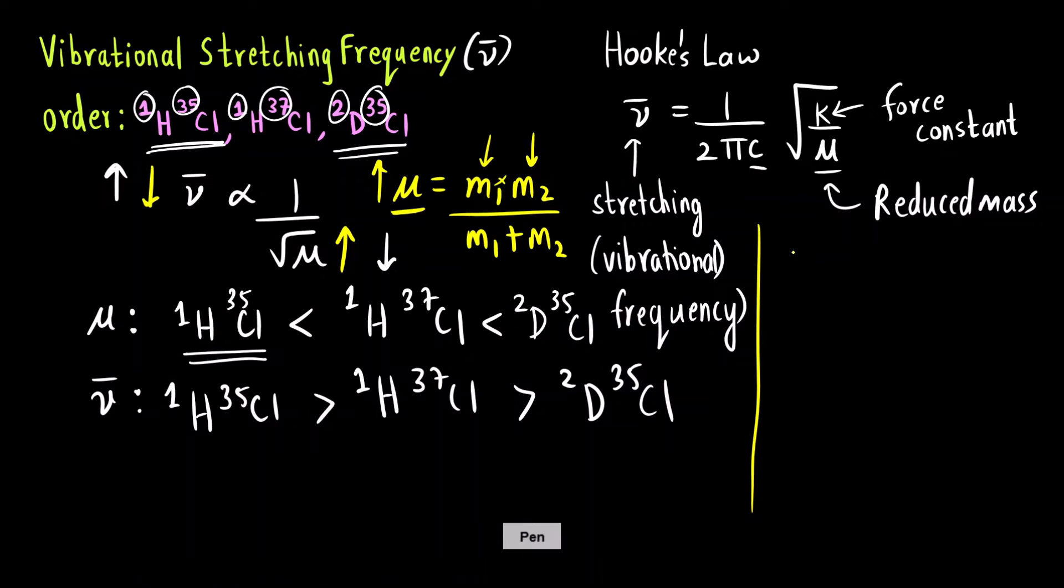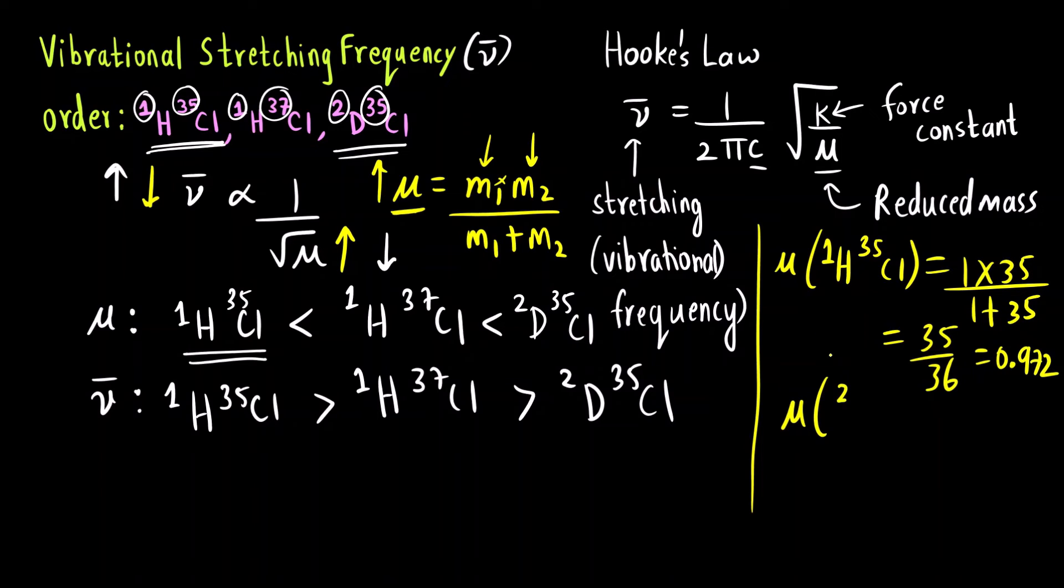Suppose I want to calculate the reduced mass of let's say 1H 35 Cl. What will be the formula 1 into 35 divided by 1 plus 35? Which is 35 divided by 36. This comes out to be 0.972. Then if I calculate for second bond 1H 37 Cl that will be 1 into 37 divided by 1 plus 37. 37 divided by 38. This comes out to be 0.974.